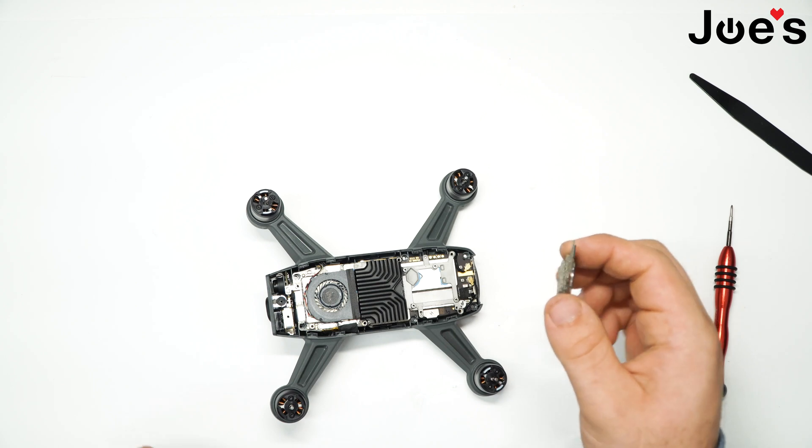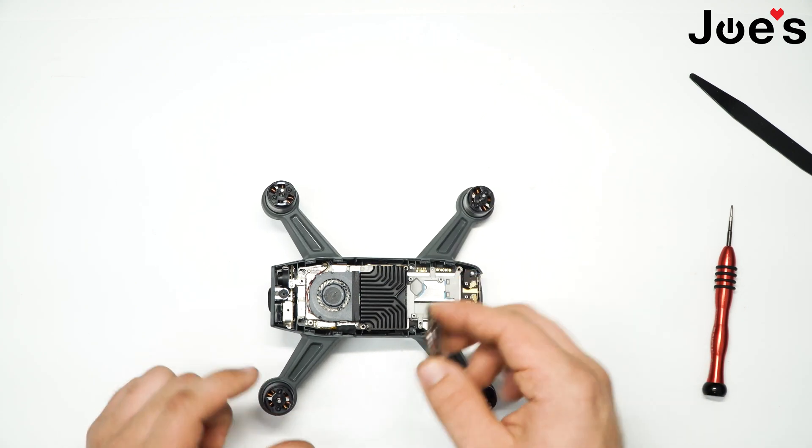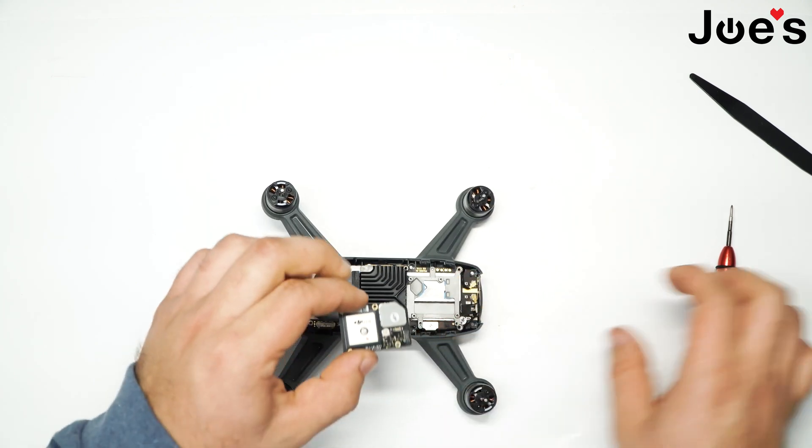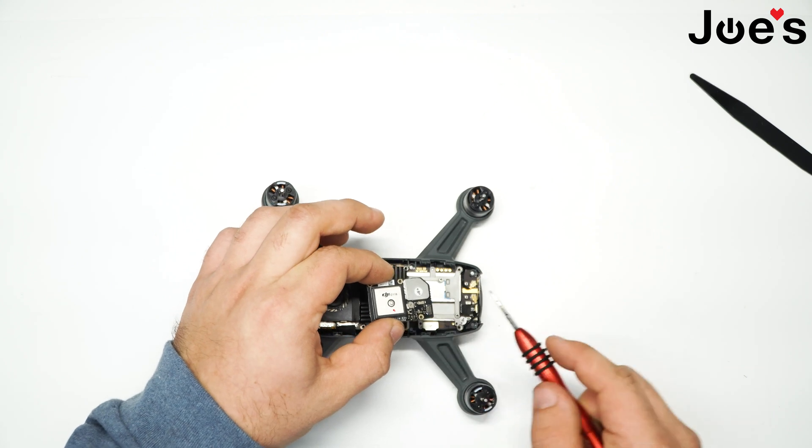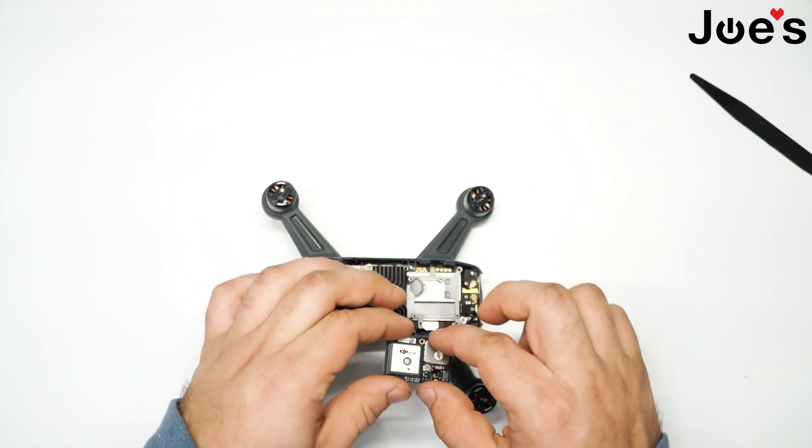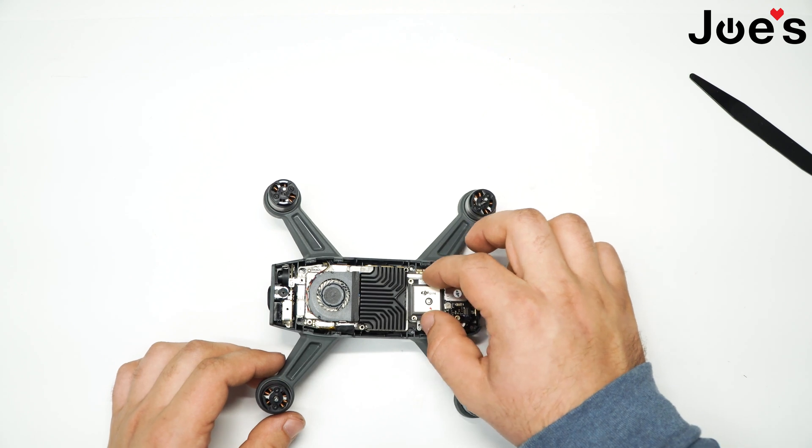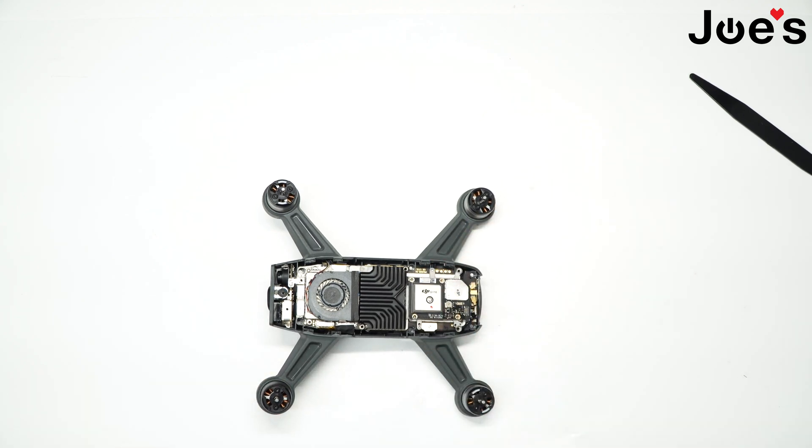We grab our new module. Make sure you position it properly so that the ribbon connection will be where the ribbon was, and the screw holes will align. If they don't, flip it over.